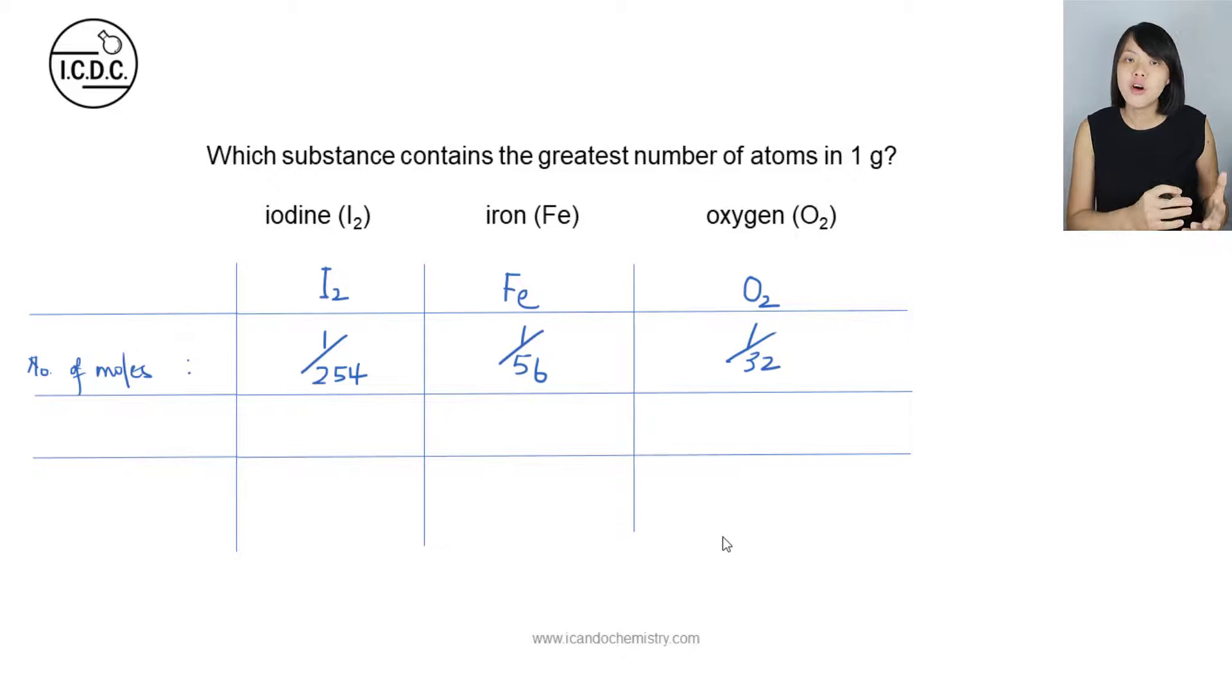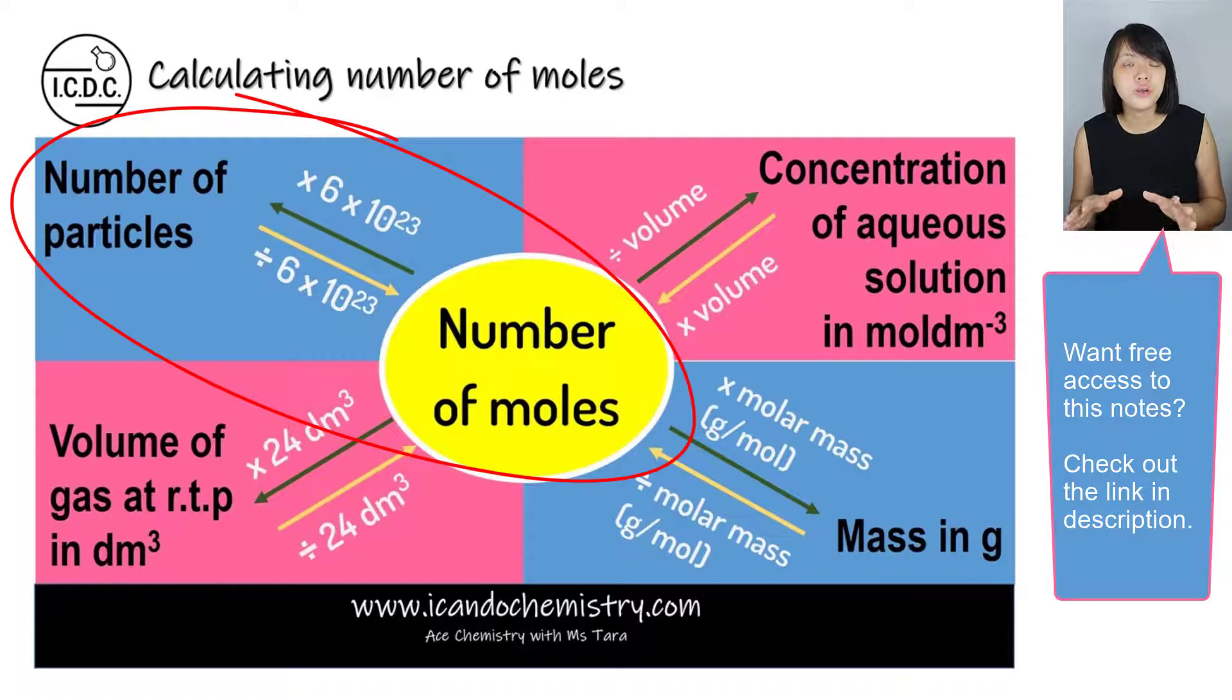Now so we know the number of moles of each option. The next thing that we are able to determine is the number of particles. So we are referring to this part. So if we are to find the number of particles, we will need to use the number of moles, which we have already determined, multiplied by the Avogadro's number, which is 6 times 10 power 23.